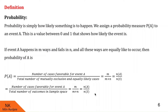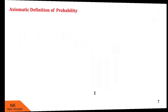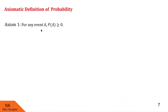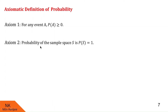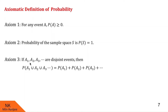This is the formal definition of probability. Now let us see the axiomatic definition of probability. The first axiom says: for any event A, probability of A is always greater than or equal to 0 — it cannot be negative. The second axiom says: probability of the sample space is always equal to 1. The third axiom says: if A1, A2, A3 are disjoint events — meaning nothing is common between them — then probability of A1 union A2 union A3 equals probability of A1 plus probability of A2 plus probability of A3.